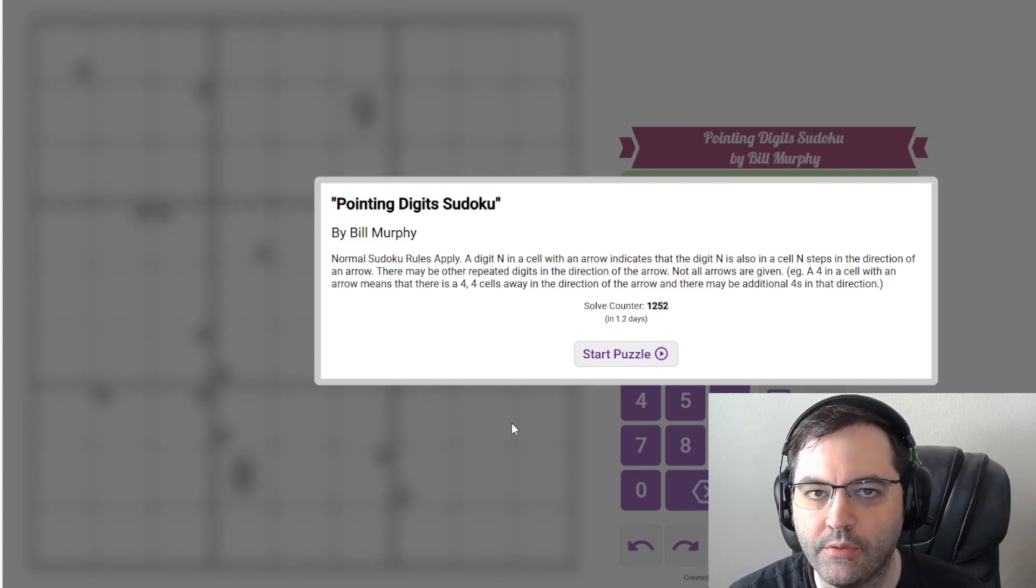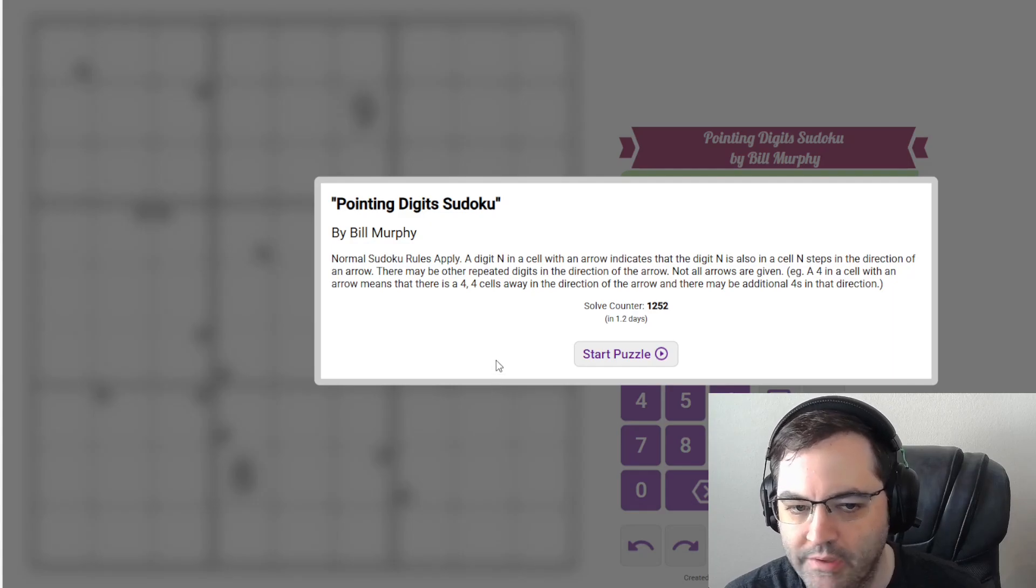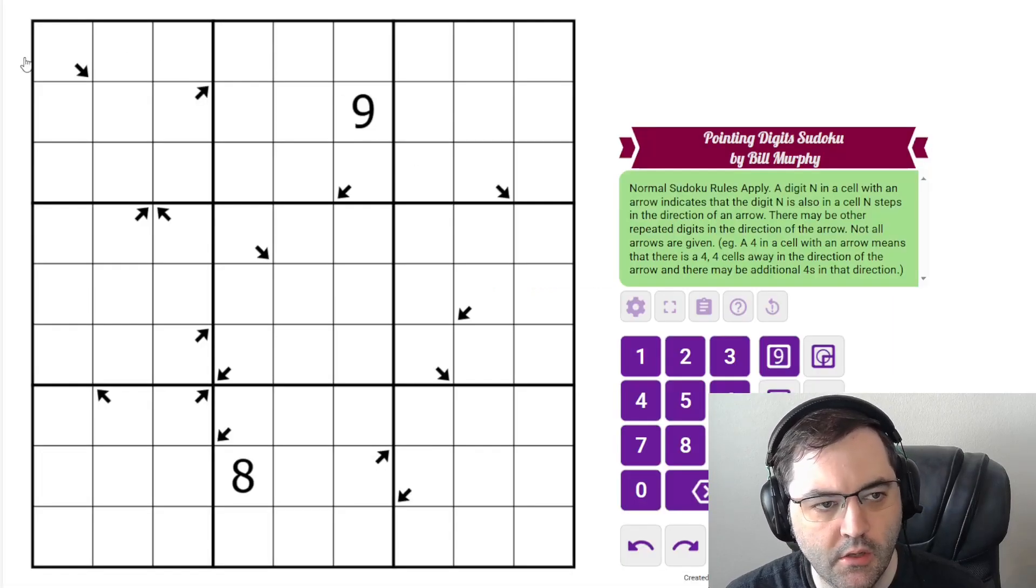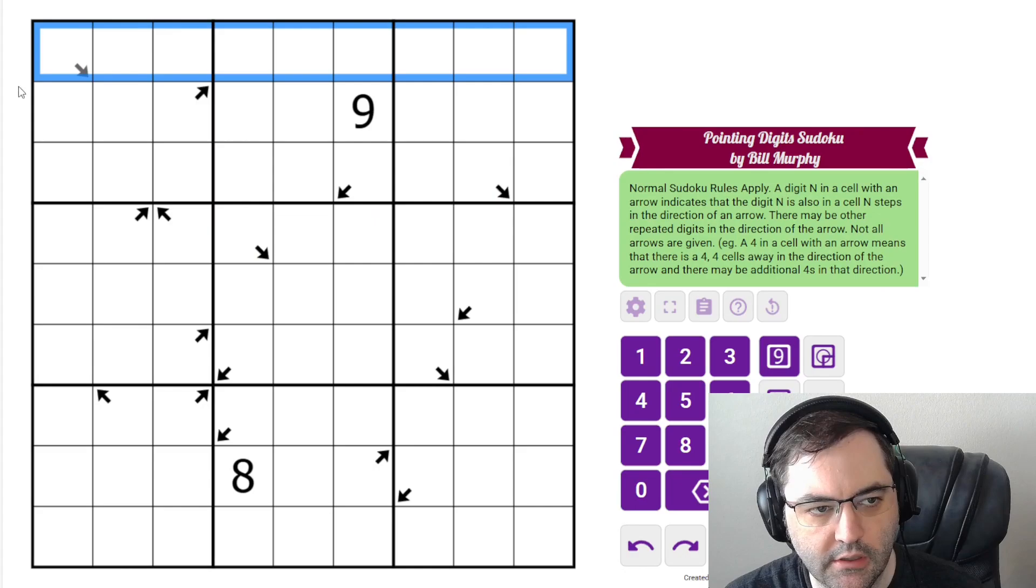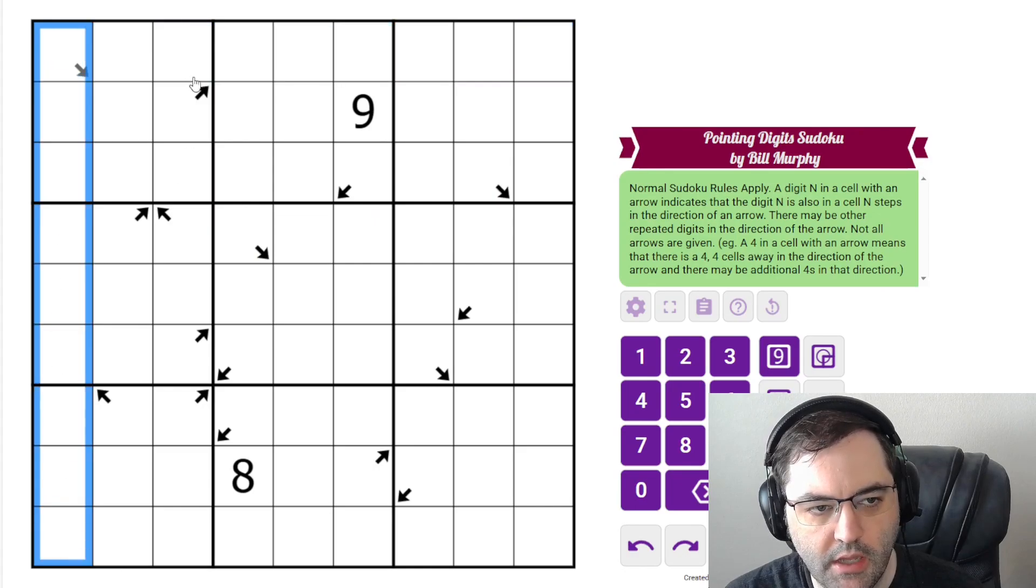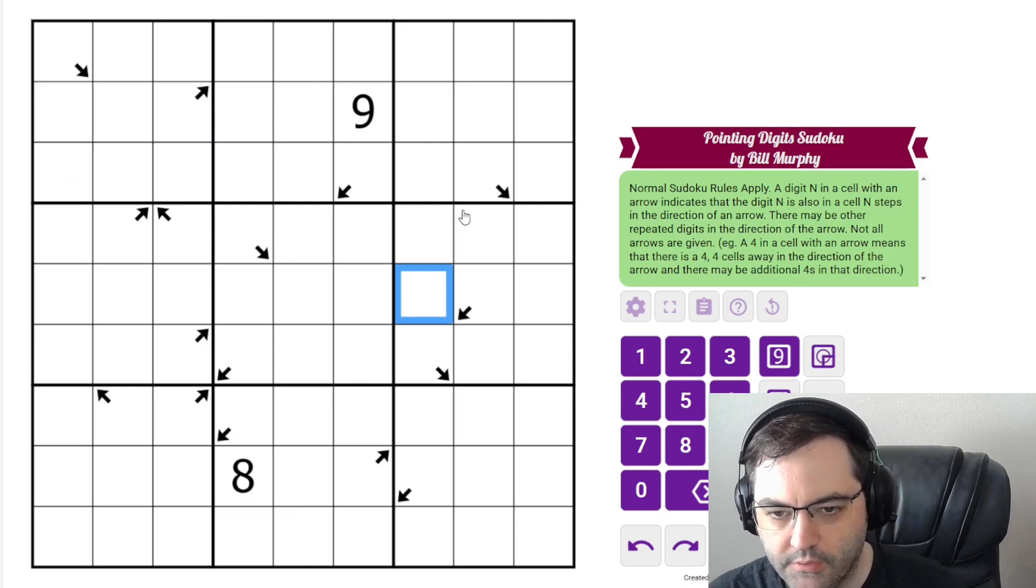Hi everyone, this is the Gas Walkthrough for May 21st. I'm Philip Newman. Today I'm solving Pointing Digit Sudoku. We have normal Sudoku rules, 1 to 9 in each row, column, and 3 by 3 box. Additionally we have some arrows in the grid. These are a little complicated.